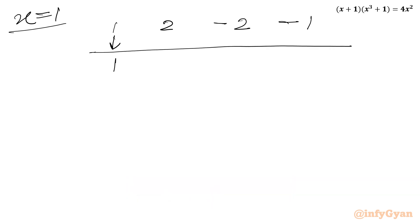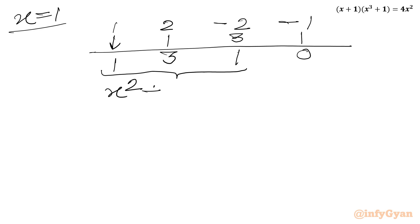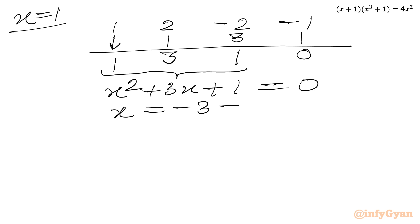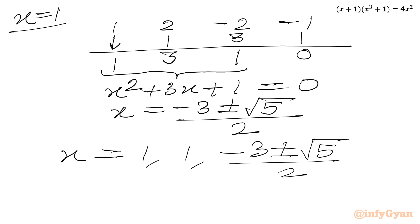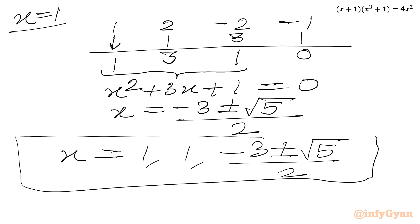Carrying out synthetic division: 1 stays as 1; 1×1 = 1, adding to 2 gives 3; 1×3 = 3, adding to -2 gives 1; 1×1 = 1, and the remainder is 0. So the coefficients of the resulting quadratic equation give x² + 3x + 1 = 0. Using the quadratic formula, x = (-3 ± √5) / 2. So there are two repeated base solutions of x = 1, and the other two solutions are (-3 ± √5) / 2. This was method number 2.